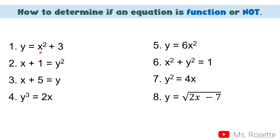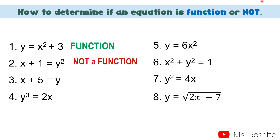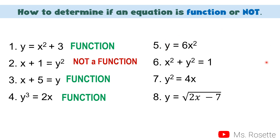Let's apply this rule. For y = x² + 3: y has no written exponent, so the exponent is 1, which is odd — therefore this is a function. For the second equation: y is raised to 2, which is even — therefore this is not a function. Number 3: y has exponent 1 — that's a function. Number 4: y³ = 2x — cube is odd — therefore this is a function. Number 5: y = 6x² — y has exponent 1 — therefore this is a function.